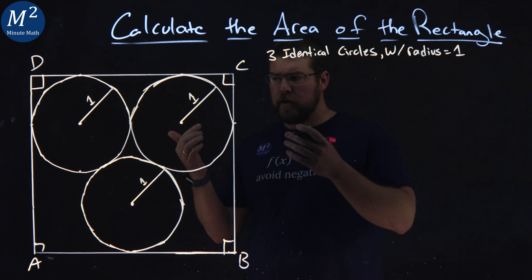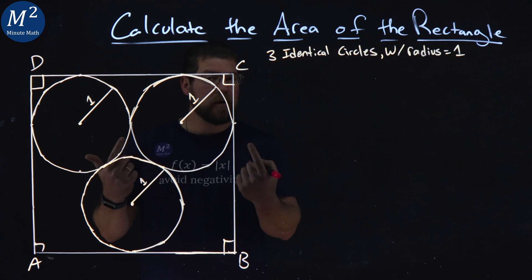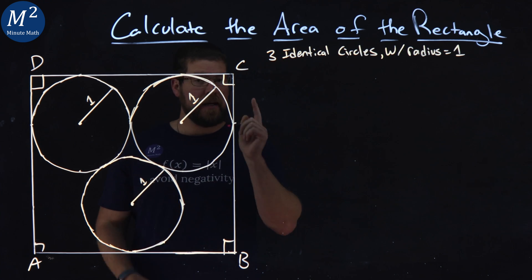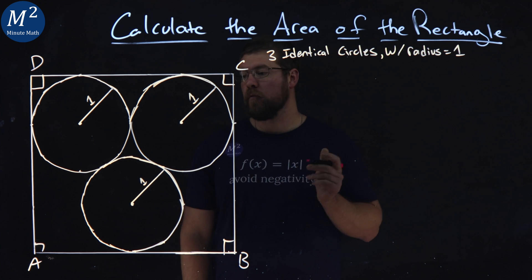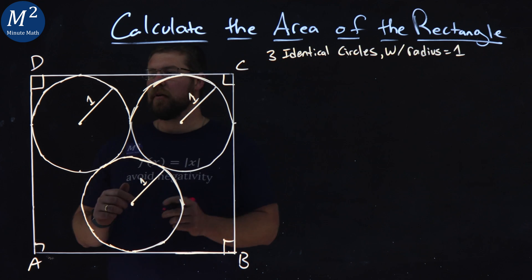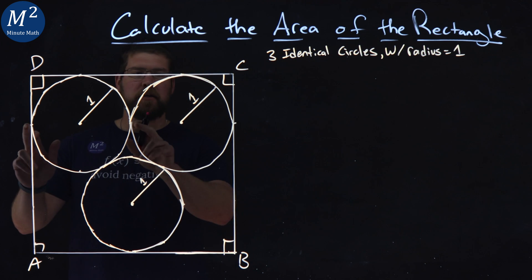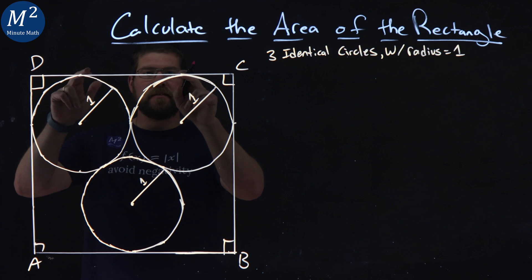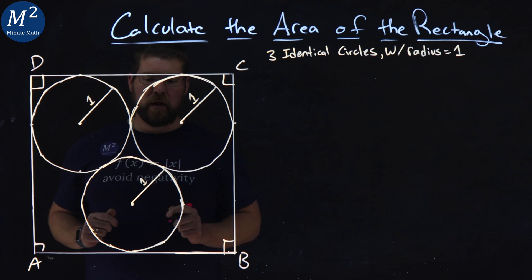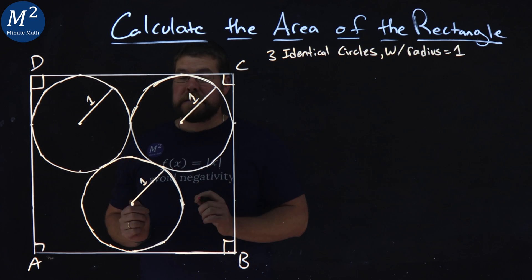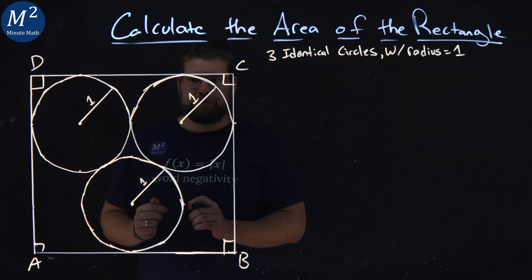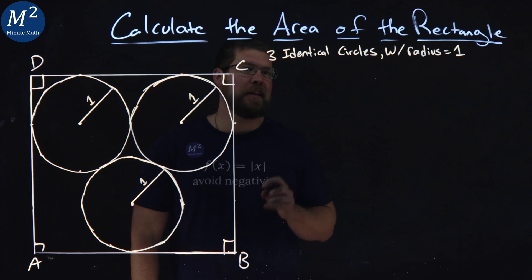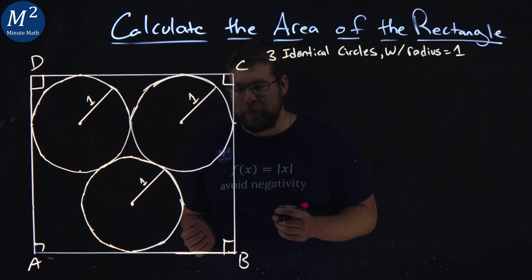What does our figure tell us? Well, we have three identical circles inside, and each one has a radius of one. These circles touch here, here, and here, and they touch the ends here, and they're perfectly inside. With just that information, can we calculate the area of the rectangle?